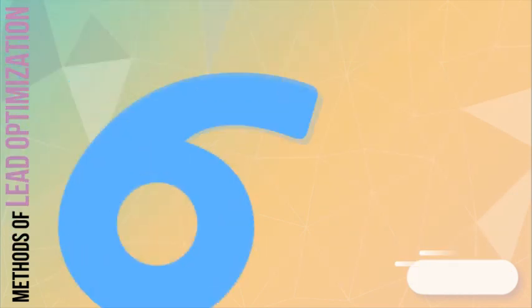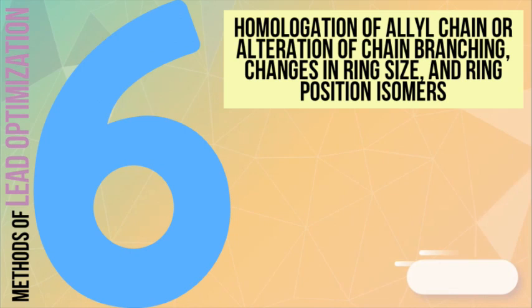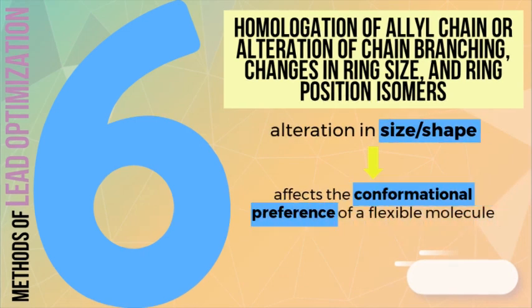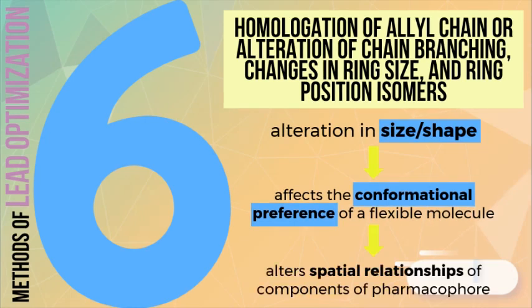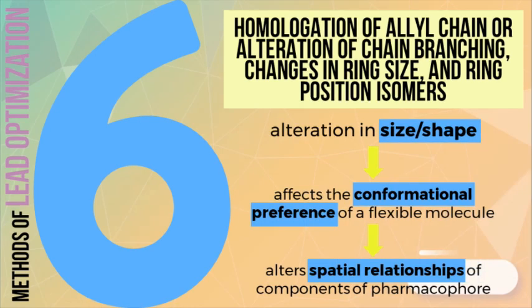Alkyl chain homologation, alteration of chain branching, or changing the ring size or ring position isomers affects the ability of the molecule to achieve complementarity with its receptor or the catalytic site of an enzyme. In short, these changes alter the molecule's binding capacity and may potentially increase the desired pharmacologic response.